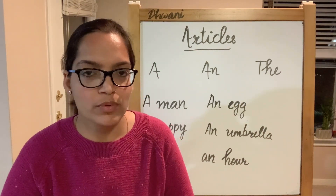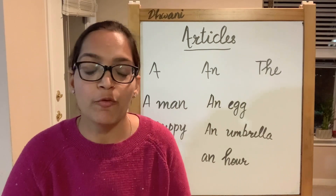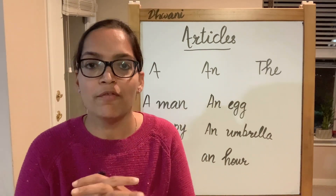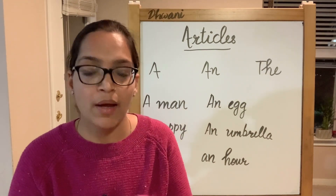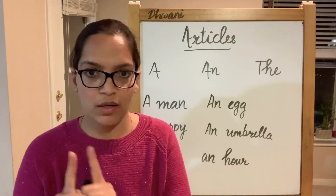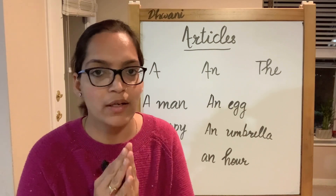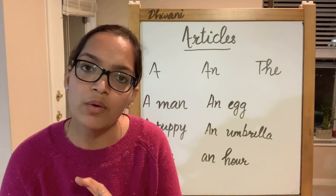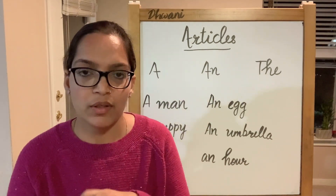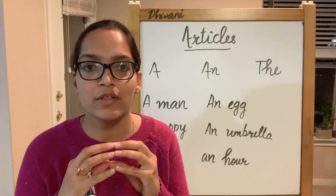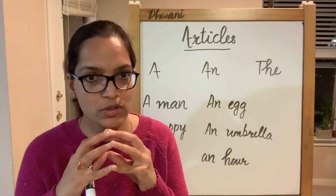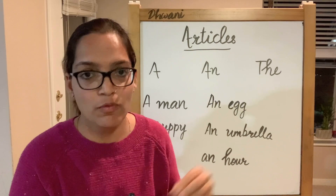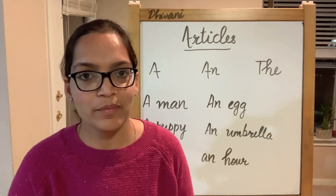Do we use articles just before nouns? We generally do, but if we have an adjective before our noun describing it, we place the article before that adjective too. The article is still talking about the noun, not the adjective. In terms of which article to use — if the adjective begins with a consonant sound, we use a; if the adjective begins with a vowel sound, we use an. Let's take some examples.